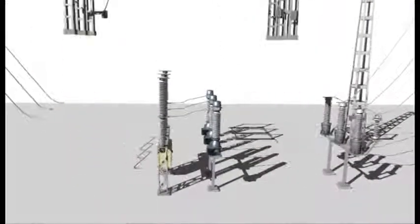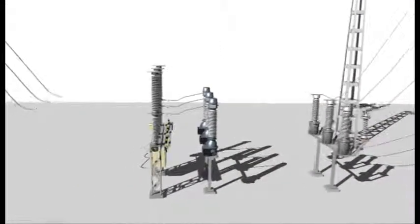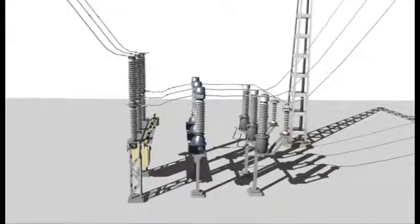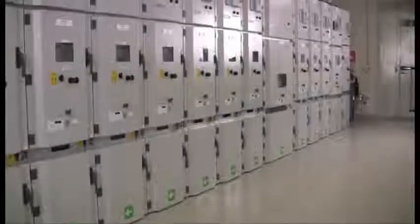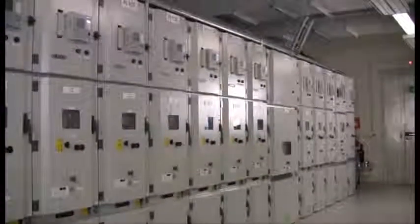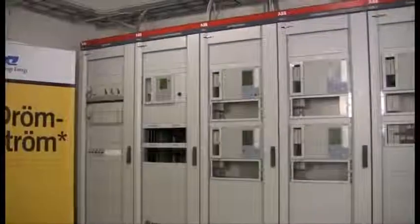Thanks to the DCBs, no conventional disconnectors are necessary. On the 10 kilovolt side, there are 30 distribution bays. The assignment also included site preparation and construction of building.